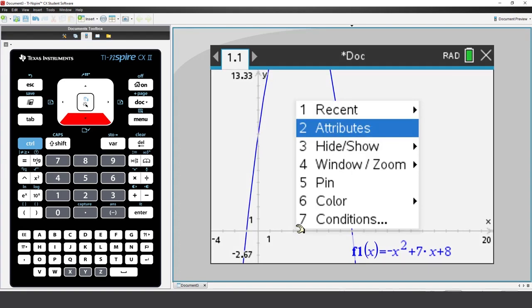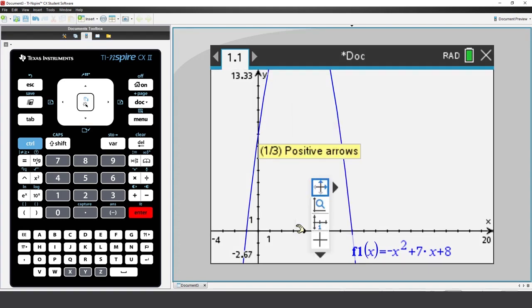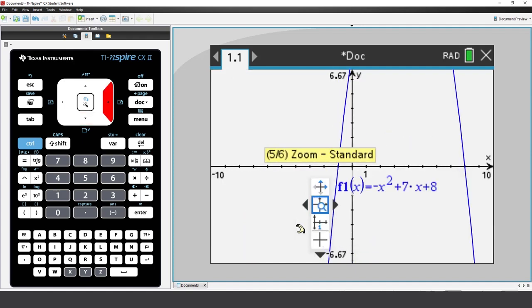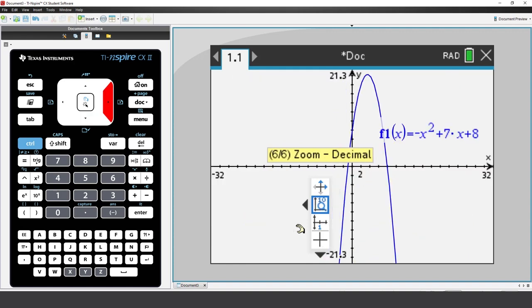Navigate down to the second item, Zoom. Now, use the left and right arrow keys to toggle through the most common zoom options, and each time you do, you get a preview of the graph. Zoom Decimal shows the key features, but now the graph is a little bit narrow.